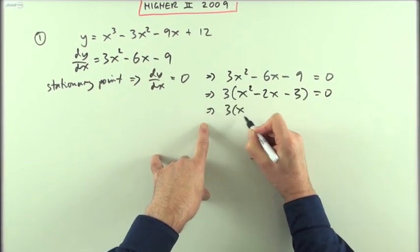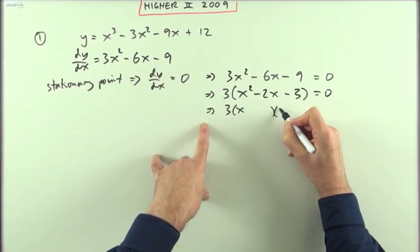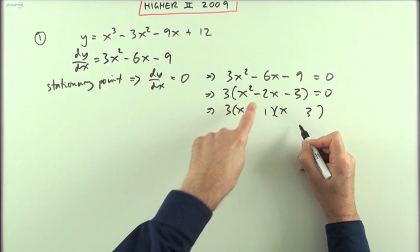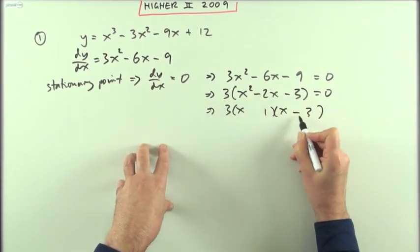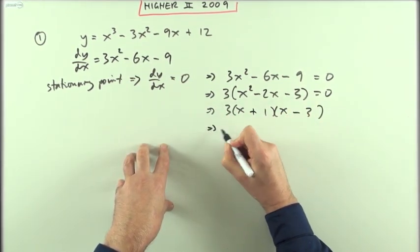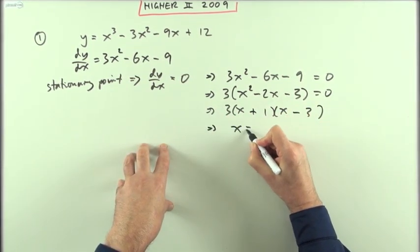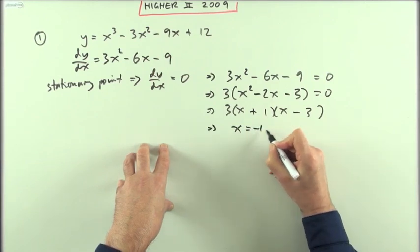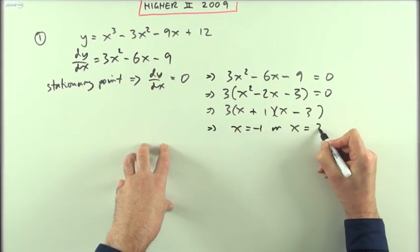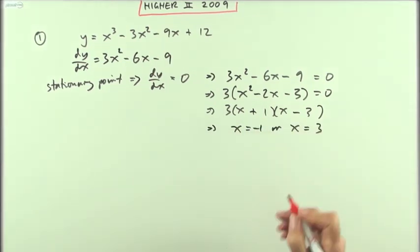That's three times, so it must be x times x. It must be one and three; the negative must go to the greater, and they're opposite signs, so it must be plus one. So I've got my two solutions: x = −1 or x = 3.